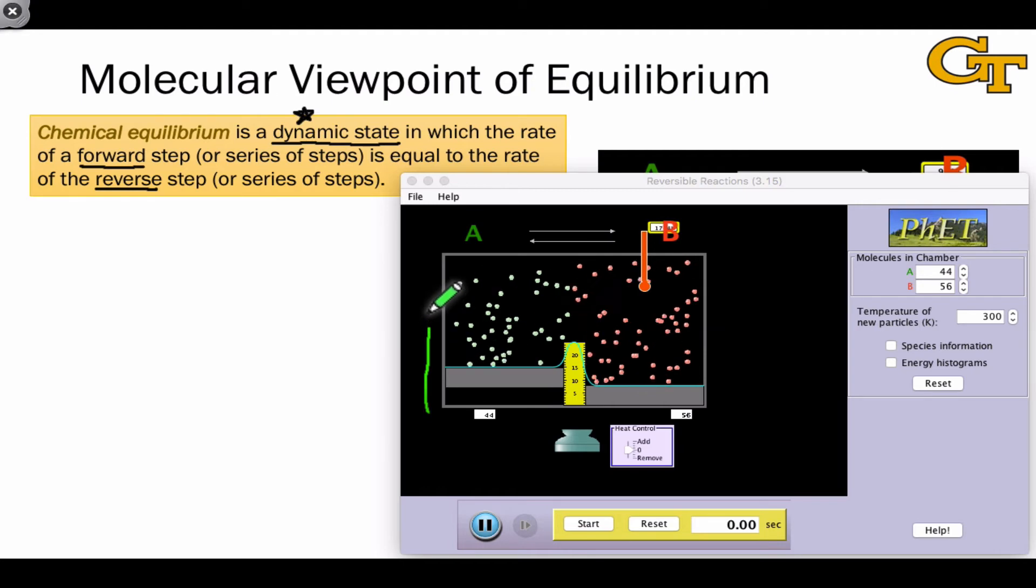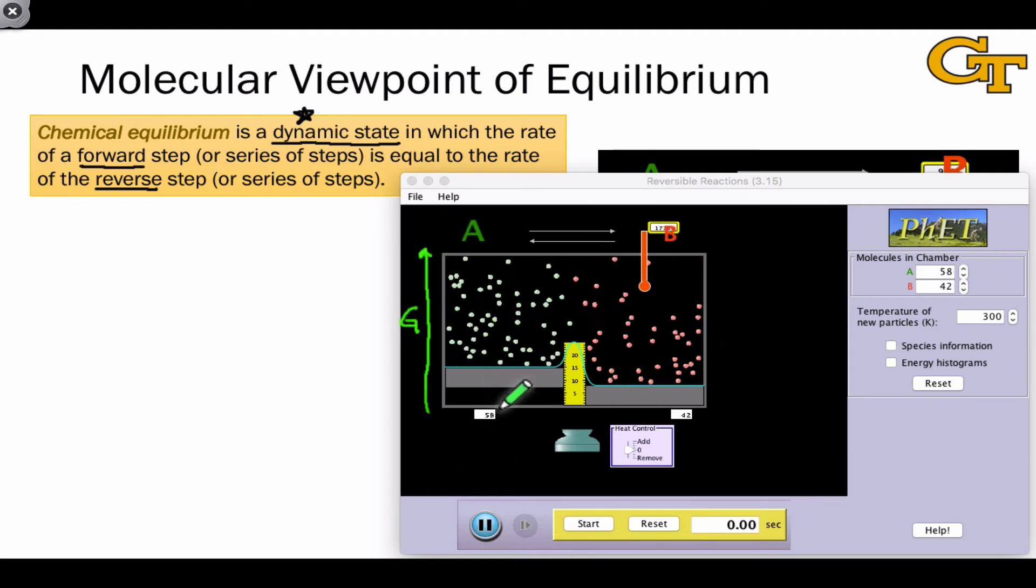The vertical axis in this simulation is free energy, G, and in addition to showing us how equilibrium amounts to equal rates of the forward and reverse processes as we just discussed, it shows us also that there's a relationship between the free energy difference between A and B and the numbers of A and B particles at equilibrium.